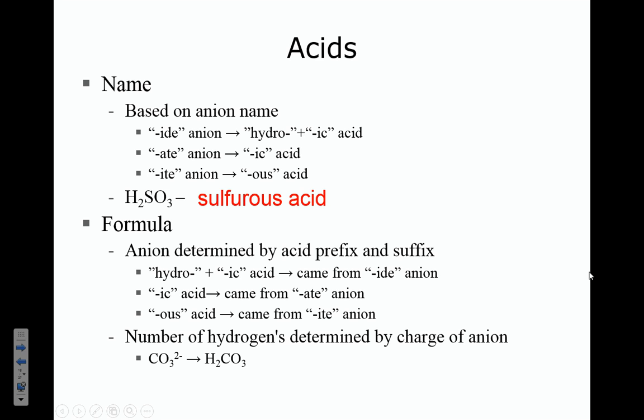For example, chloric acid: it's an '-ic acid', so it came from '-ate', meaning we look up chlorate. Chlorate is ClO3-, just a -1 charge. So we need one hydrogen: HClO3. That's how we find the formulas of acids — based upon the anion in the acid and its charge.